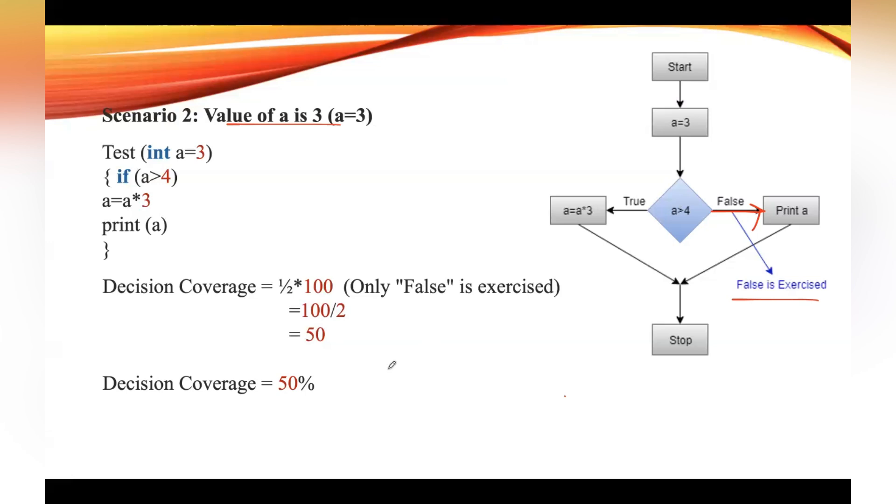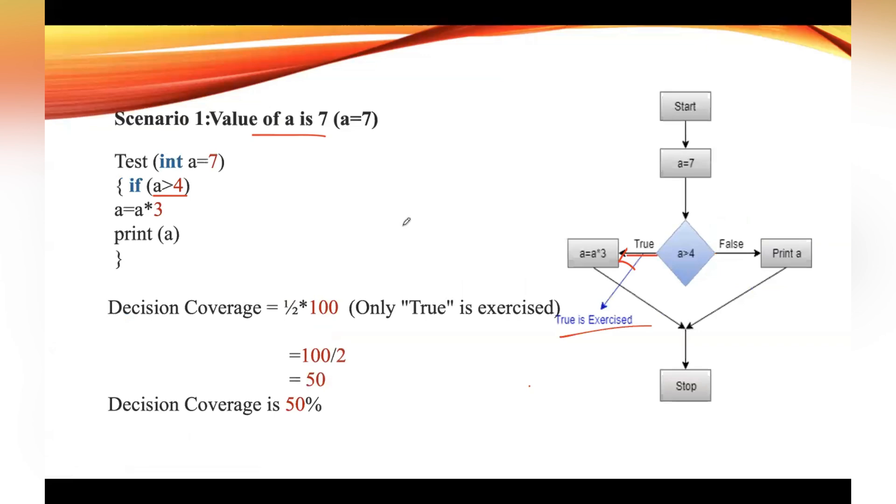You can draw a test case table also. How many test cases we considered? Two. In our first test case where value of a is 7, if value of a is 7 then this part will be executed. So 7 into 3, output will be 21. Value of a is 7 and output is 21. What is the decision coverage? 50%.